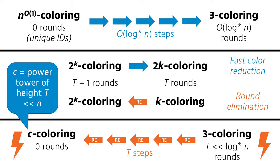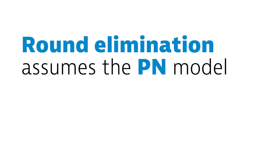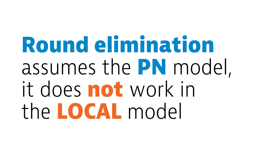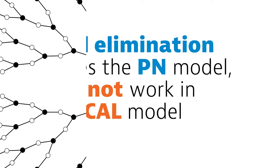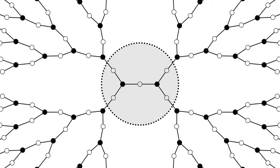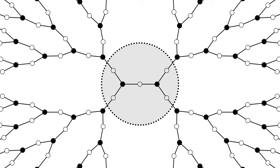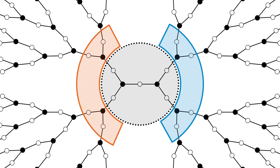Well, that's the idea at least. Too bad we can't do it directly like this. The way we described round elimination in the previous weeks, it can only be applied in the PN model. We can't do round elimination in the local model, and there is a good reason for that. Round elimination heavily relies on independence. You consider all possible inputs here, and all possible inputs here, and conclude that all possible combinations of these inputs are possible. But if you have unique identifiers, this no longer holds. Identifier 1 might be here or here, but not in both places simultaneously. So we can't directly do round elimination in the local model — we have to get there indirectly.